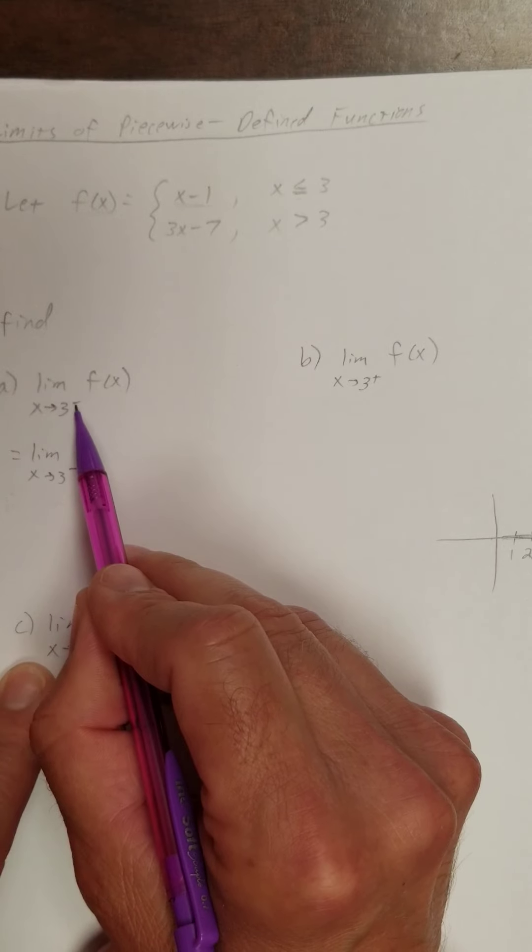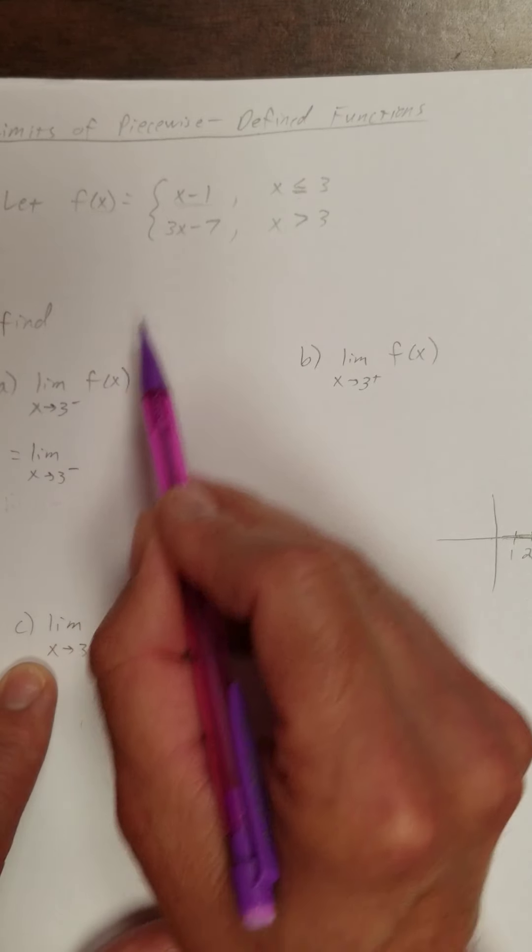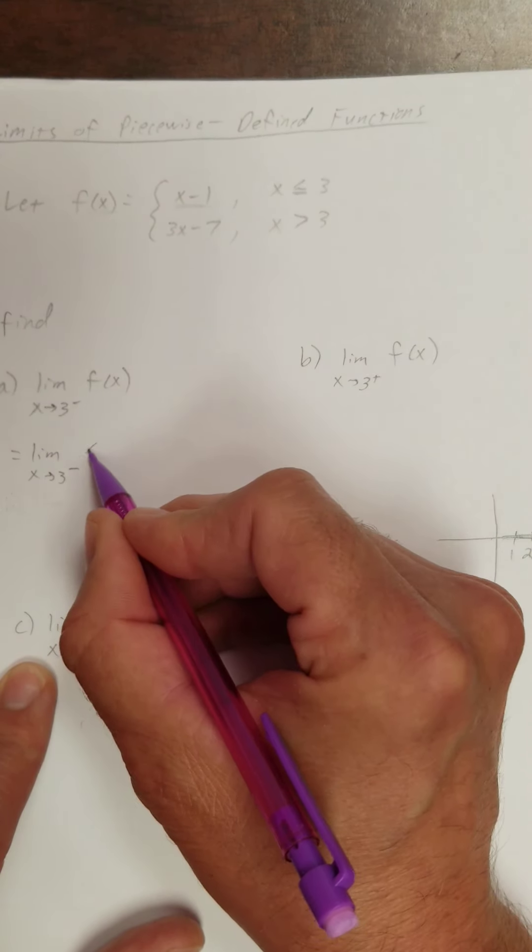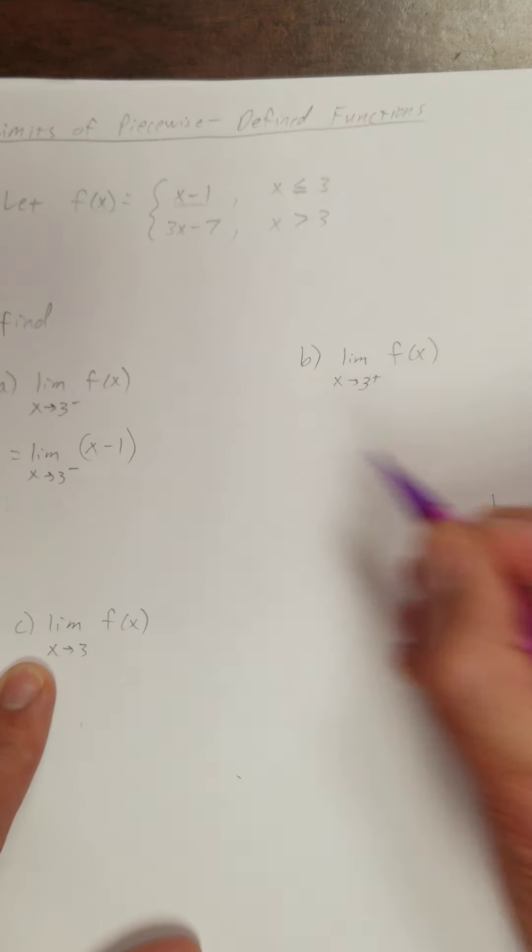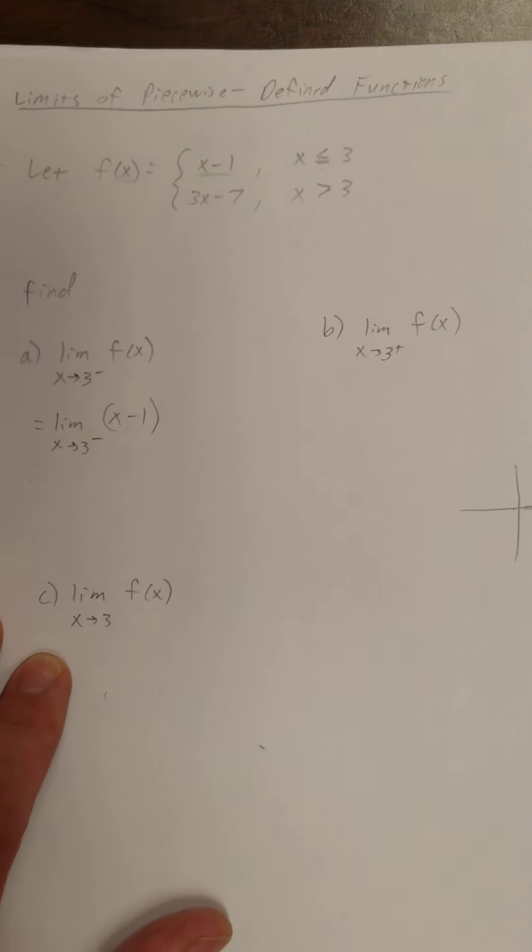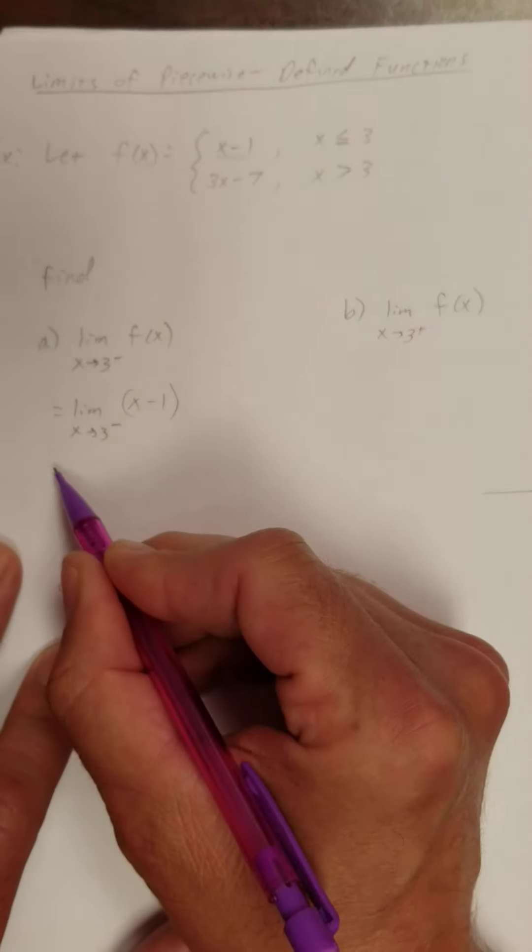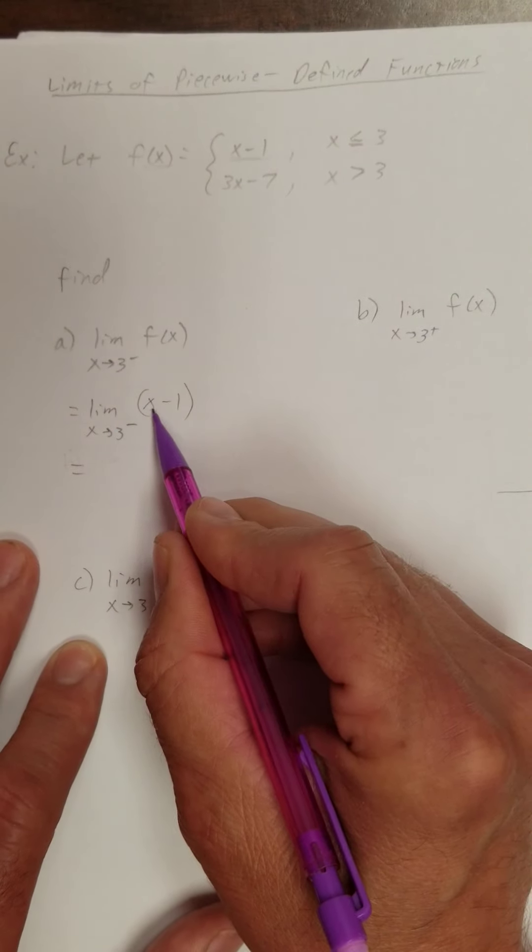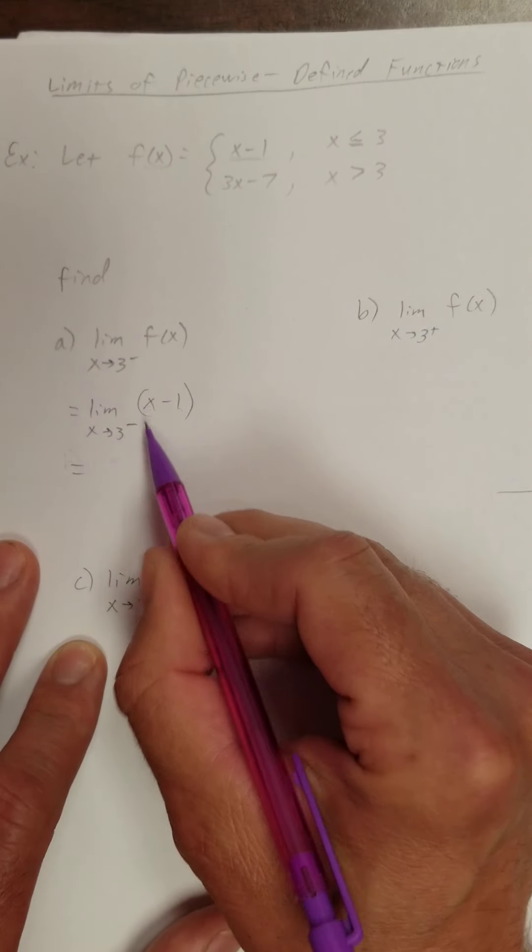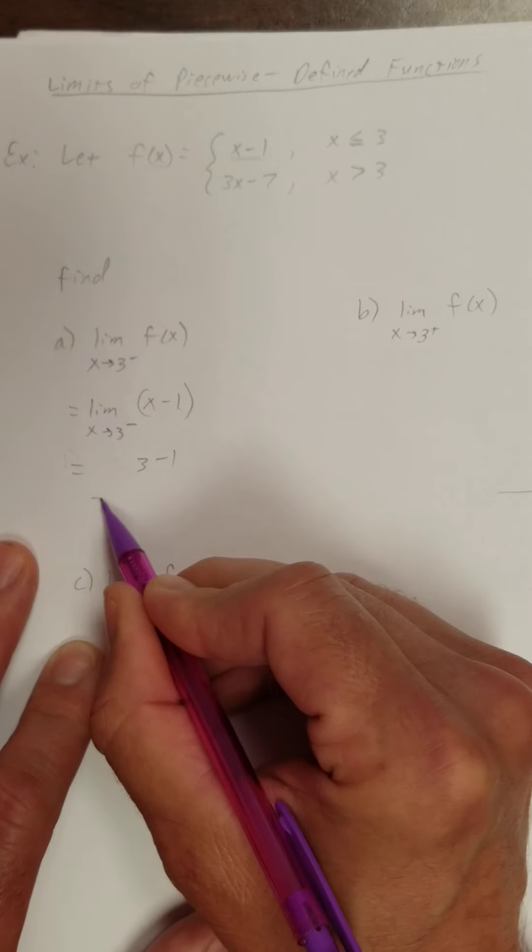So I'm going to say the limit as x approaches 3 from the left of f(x), we'll be using x minus 1. Well, that's going to equal, that's just a polynomial, so I could sub in 3, 3 minus 1, which is 2.